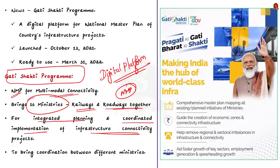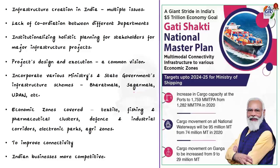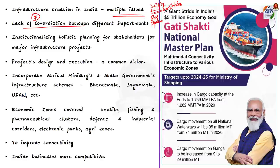Why was it brought? Infrastructure creation in India had suffered for decades from multiple issues. One such issue is lack of coordination between different departments. For example, take a recently constructed road — other agencies start to dig up the road soon after its inauguration for activities like laying underground cables, gas pipelines, etc. This not only causes great inconvenience but was also wasteful expenditure. To address this, efforts were put in place to increase coordination so that all activities like laying cables and pipelines could be done simultaneously before road construction begins. Coordination is the key.